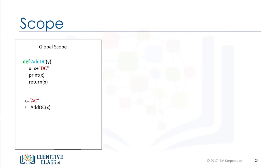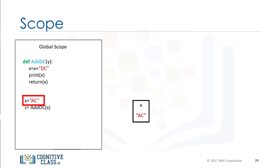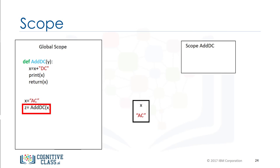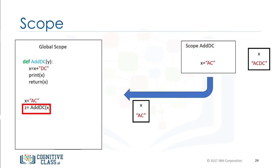The scope of a variable is the part of the program where that variable is accessible. Variables that are defined outside of any function are said to be within the global scope, meaning they can be accessed anywhere after they are defined. Here we have a function that adds the string 'dc' to the parameter x. When we reach the part where the value of x is set to 'ac', this is within the global scope. A variable defined in the global scope is called a global variable. When we call the function, we enter the scope of add_dc, passing 'ac' as an argument. Within the scope of the function, the value of x is set to 'ac dc'. The function returns the value and it is assigned to z, so within the global scope the value of z is set to 'ac dc'.